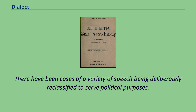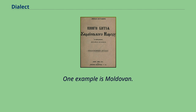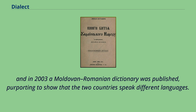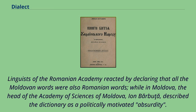There have been cases of a variety of speech being deliberately reclassified to serve political purposes. One example is Moldovan: in 1996, the Moldovan parliament, citing fears of Romanian expansionism, rejected a proposal to change the name of the language to Romanian. In 2003 a Moldovan-Romanian dictionary was published purporting to show that the two countries speak different languages, but linguists of the Romanian Academy declared that all the Moldovan words were also Romanian words, while the head of the Academy of Sciences of Moldova described the dictionary as a politically motivated absurdity.